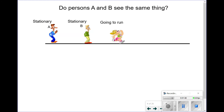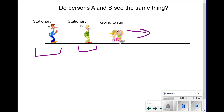Here we have a situation with two stationary observers — Observer A and Observer B — standing still but at two different locations. A person is going to run to the right. Do persons A and B see the same thing? We might think they're watching the same person run, so of course they'd see the exact same thing. The truth is, there will be some things they agree on and some they disagree on. Our goal is to understand what's common and what's different, and how those differences translate across observers.